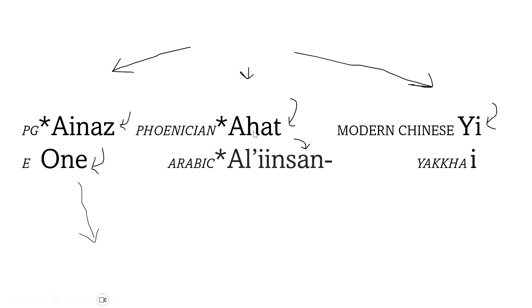And there's Ahat and Al'iinsan—I don't know if I'm pronouncing that right—in Phoenician and Arabic, and then Yi and Yi in Modern Chinese and Yakkha. So English and German all come from Proto-Indo-European, which is pretty well known.